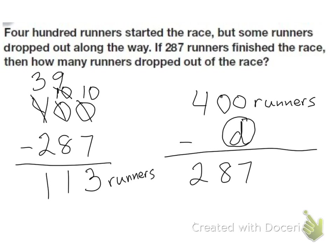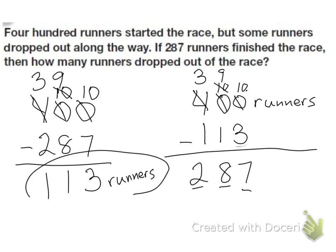To double-check, we put this answer in for D. So 113. And let's see if our answer is correct. So we borrow here. So 10 minus 3 is 7, that's correct. 9 minus 1 is 8, good. 3 minus 1 is 2. So my answer is correct, 113 runners.